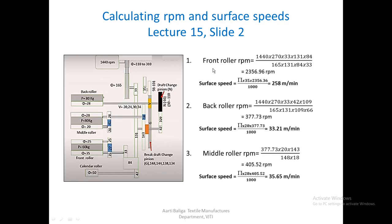For all three — front roller, back roller, and middle roller — I can find the surface speed, which I need for calculating the drafts. It is π × d, where the diameter is 35 for the front roller, multiplied by the RPM we just found, giving 258 meters per minute. For the back and middle rollers, surface speed is π × d × n divided by 1000, since diameter is in mm. The middle roller surface speed comes out to 35.65 meters per minute.